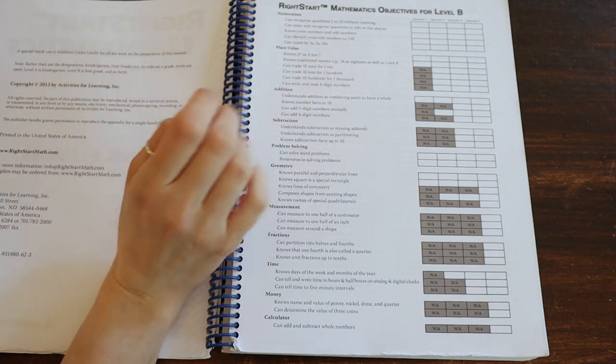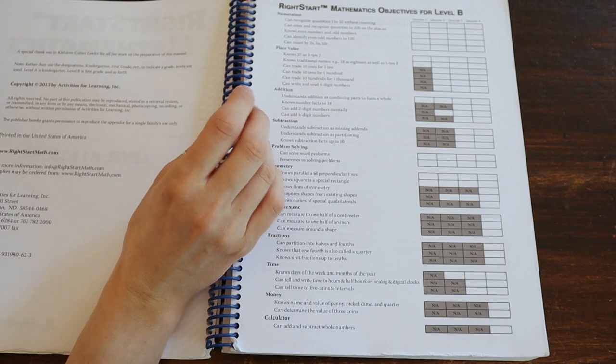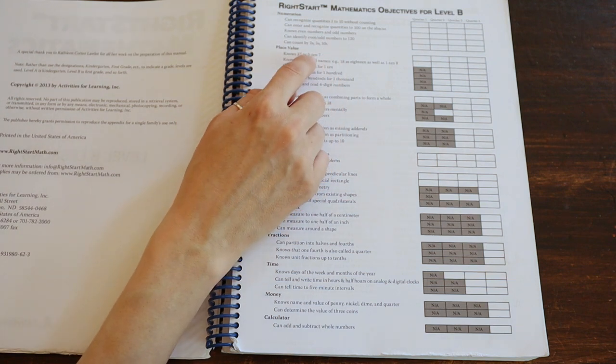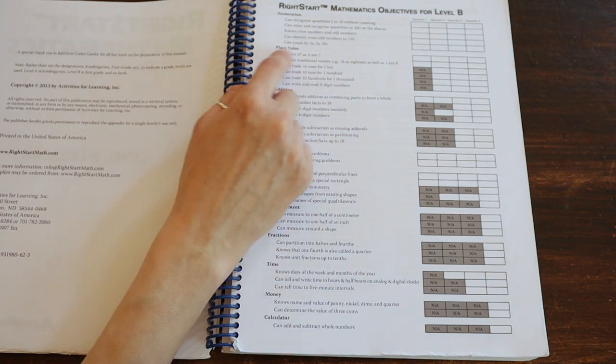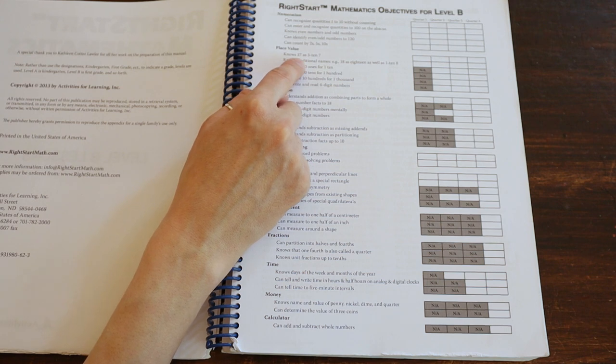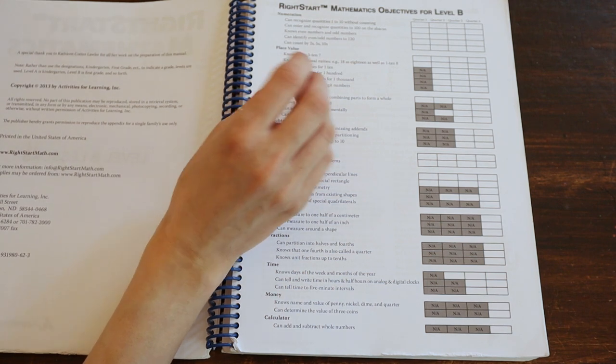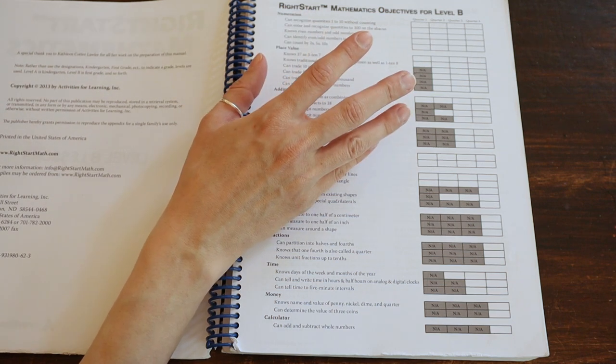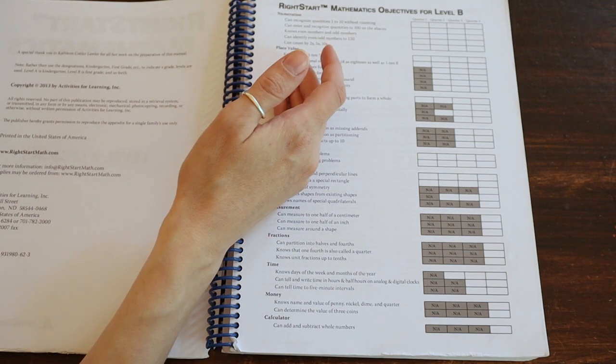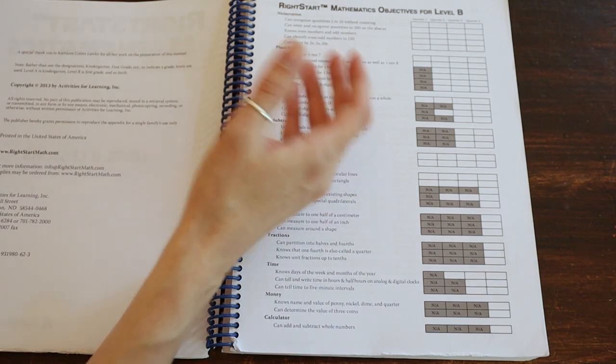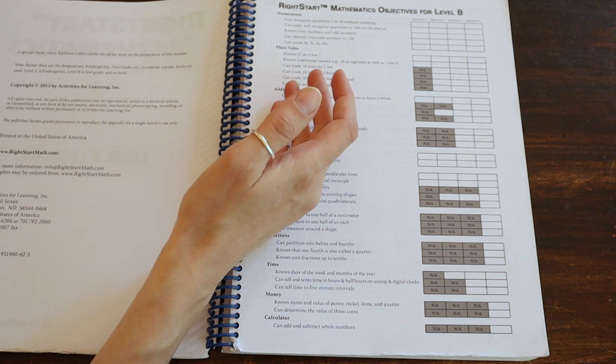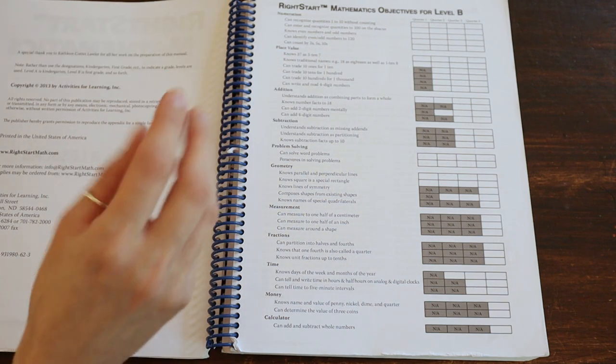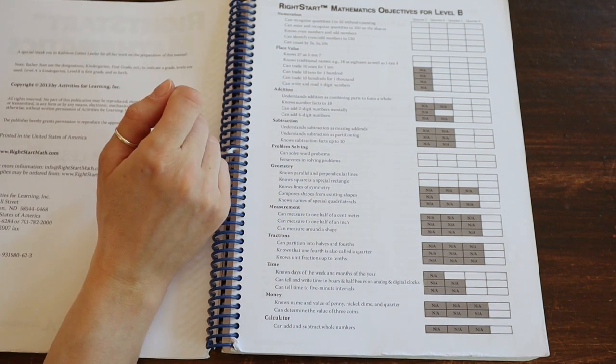So let's talk about place value for Right Start. Right Start is probably the most famous for referring to numbers as groups of 10 and then the one. So if you were talking about the number 37, you would refer to it as 3, 10, 7. And the reason being English is very strange in the way it lays out numbers. You've got one through 10. And then instead of repeating the pattern, you have all these weird teen numbers. It goes 11, 12, 13, 14, 15. And it's not, it's hard to hear the same kind of numbers.